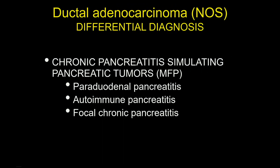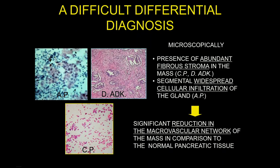When we deal with a pancreatic mass, we can have lesions simulating a pancreatic tumor. More specifically, we can have solid paraduodenal pancreatitis, focal autoimmune pancreatitis, and focal chronic pancreatitis. These lesions can simulate pancreatic cancer because they have abundant fibrostroma in chronic pancreatitis, similar to ductal adenocarcinoma, or they can have segmental widespread cellular infiltration, such as in autoimmune pancreatitis.